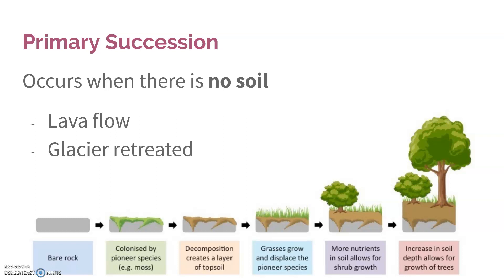That bare rock over time will be broken down into smaller pieces, which is what we call weathering. You also have little pioneer species come in — those are species that can live on bare rock, things like lichen, moss, and bacteria. As they die, they add nutrients to that bare rock, which is gradually getting broken down into smaller and smaller pieces, so the tiny bits of rock combine with the nutrients.